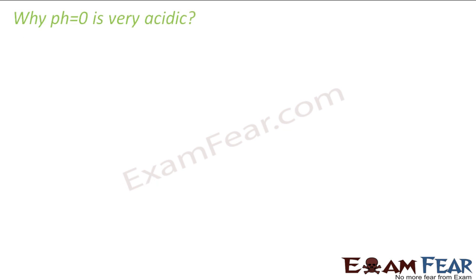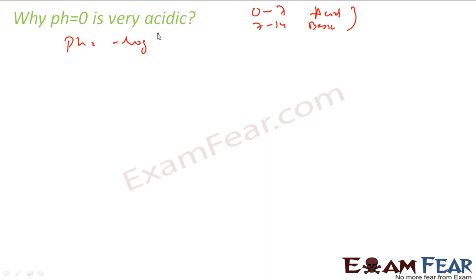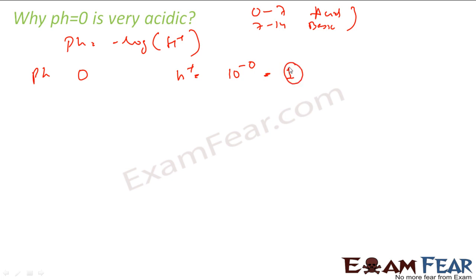As I told, pH equal to 0 is very acidic. Why is it so? Why is 0 to 7 acidic and 7 to 14 basic? pH is nothing but minus log of H plus ion concentration. So if pH is equal to 0, that means H plus ion concentration is 10 to the power minus 0, which is 1. That means H plus ion has a huge concentration. If pH is equal to 1, H plus ion concentration is 10 to the power minus 1.